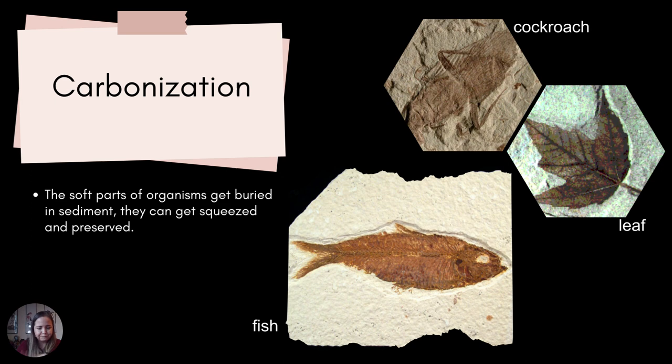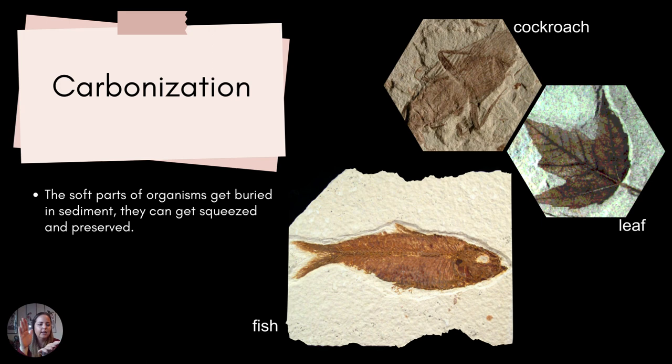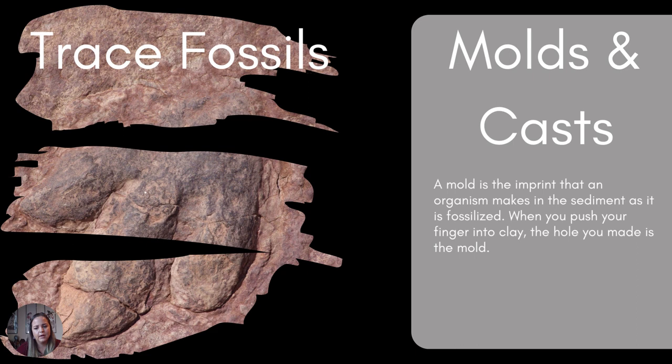Carbonization — which we've already talked about a little bit — is when a soft-part organism gets buried very quickly with soft sediment, all of the oxygen gets squeezed out, and there will be a carbon imprint on the sediment. We do need light-colored sediment because darker sediment makes it hard to see the fossil. Here we have a fish, a leaf, and a cockroach, all with soft parts, preserved from the carbon imprint on the sediment.